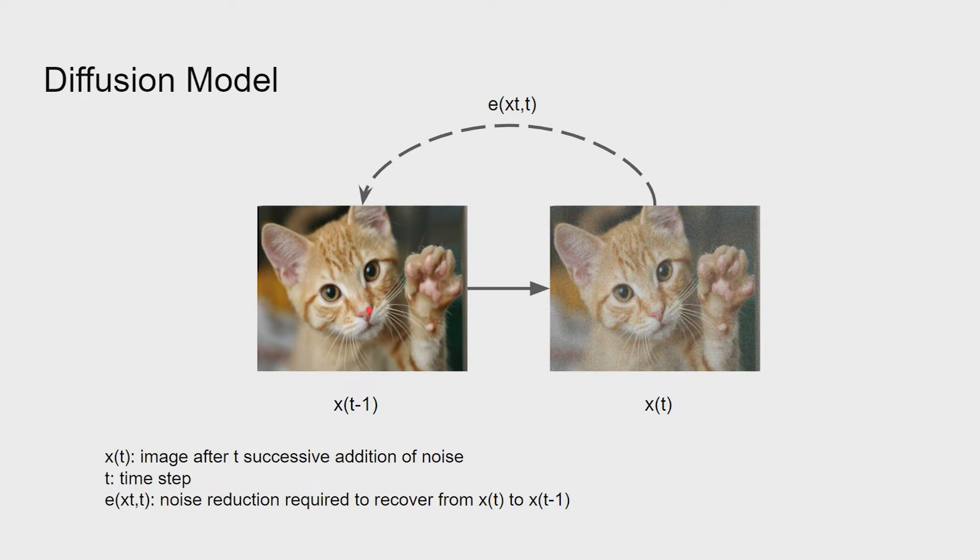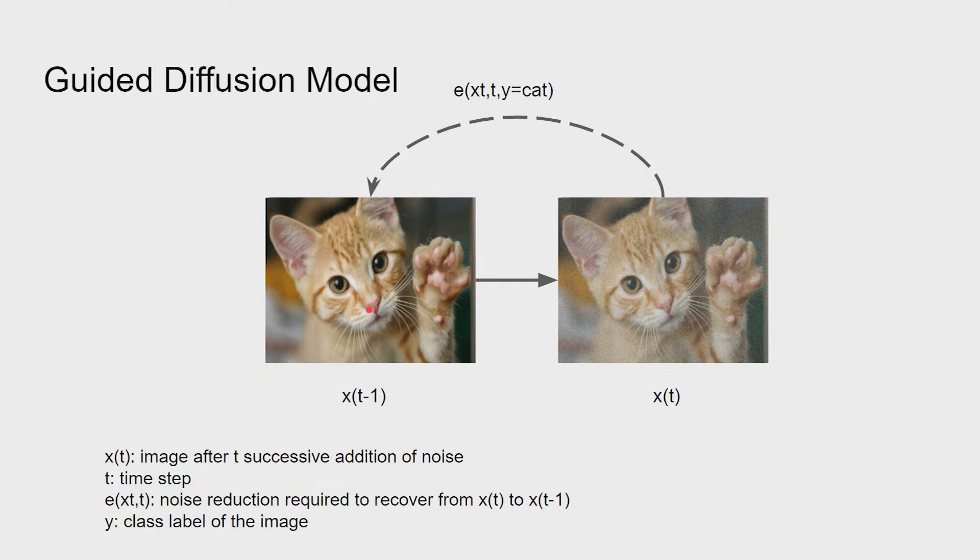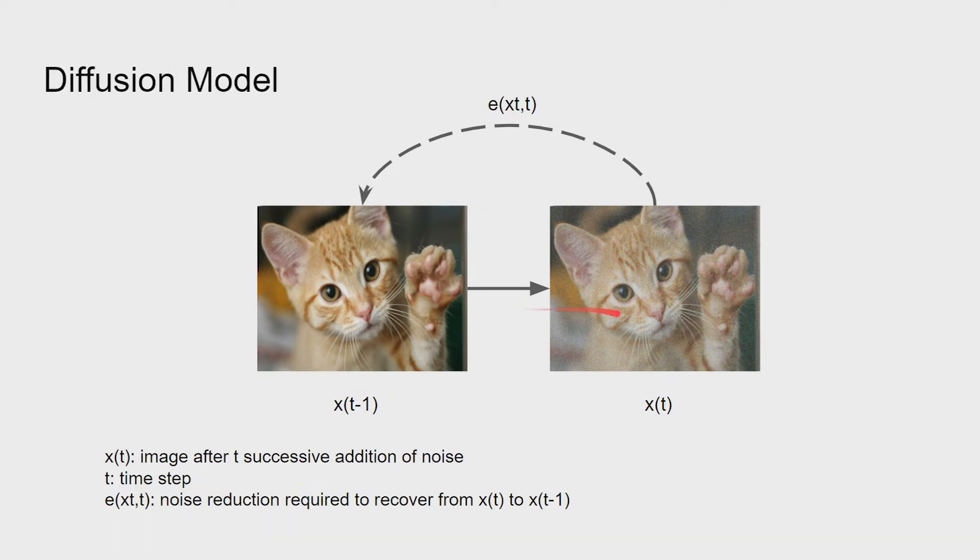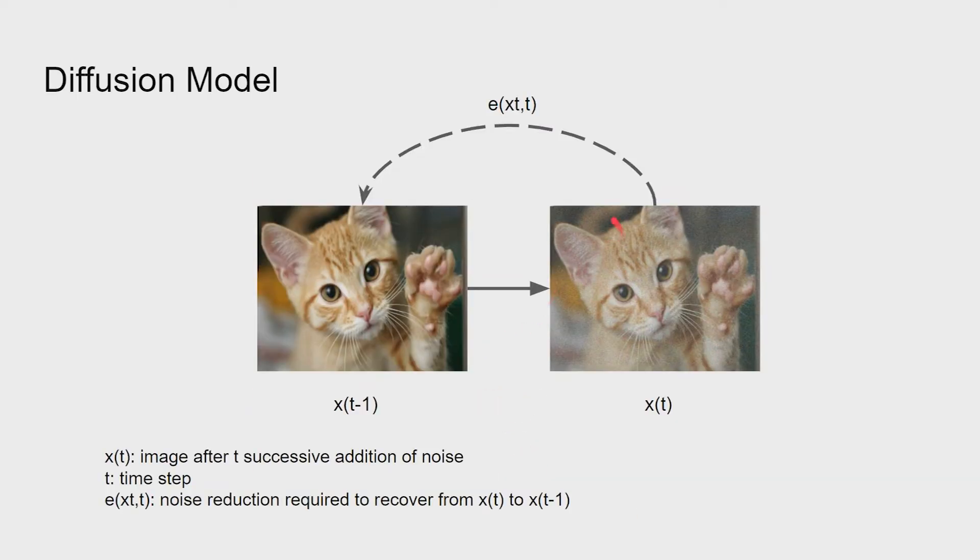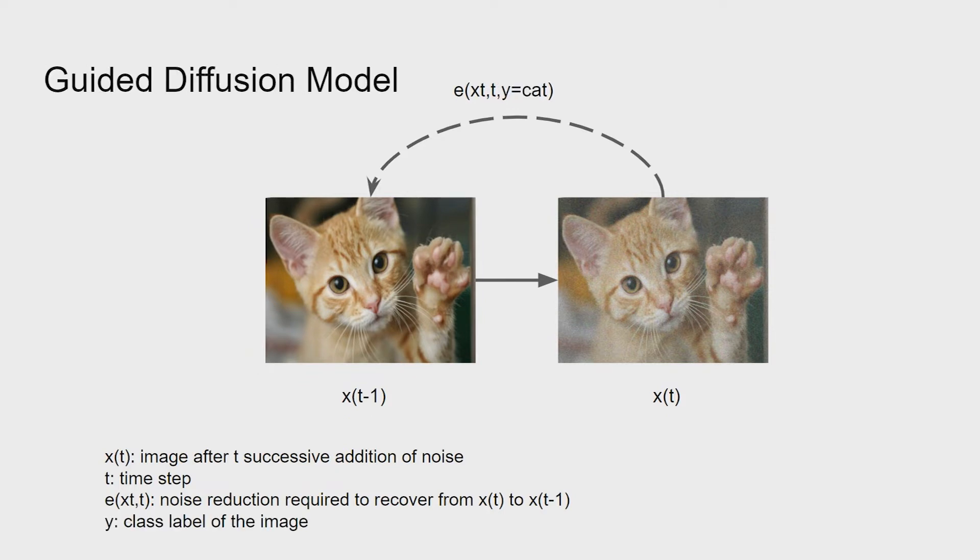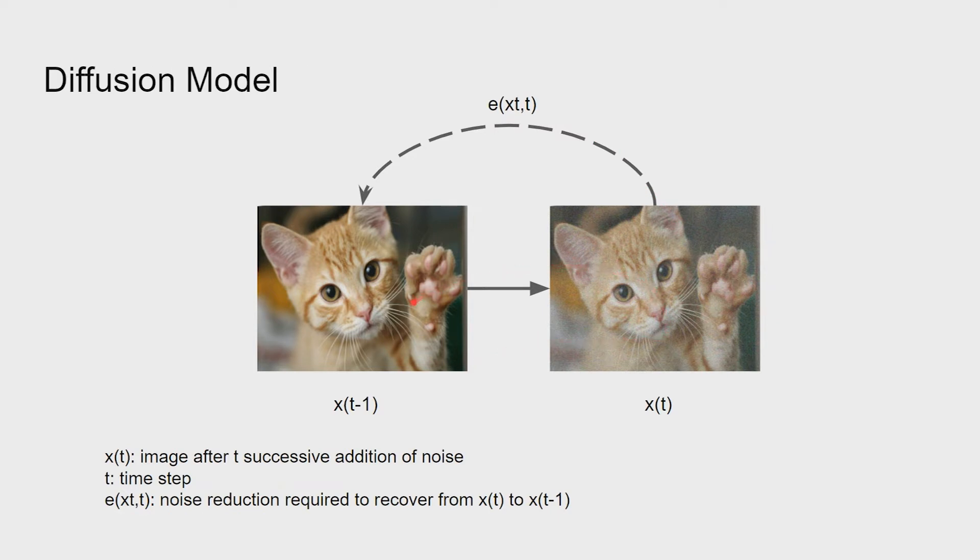If we repeat this reverse process to predict the previous sharper image starting from random noise almost infinitely many times, we can generate some photorealistic image given only noise. This is the basis of diffusion models. Note that in each step, the model is actually predicting the noise that needs to be reduced to get the previous step image.